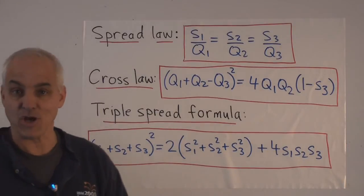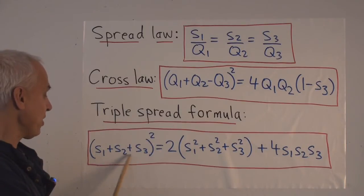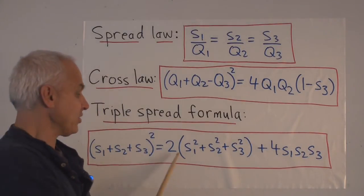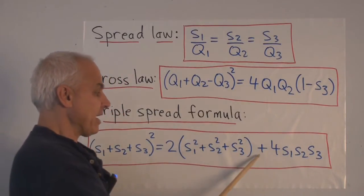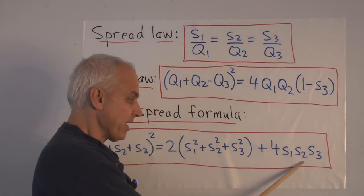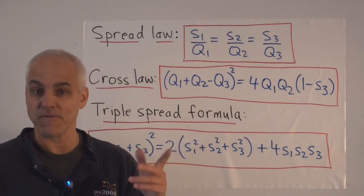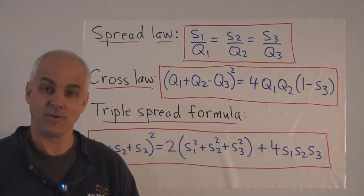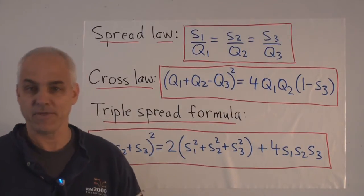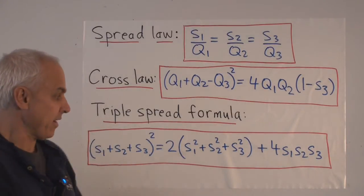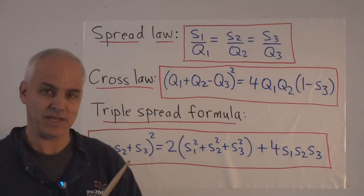Finally, there's a relationship between the three spreads of a triangle called the triple spread formula: (s1 + s2 + s3)² = 2(s1² + s2² + s3²) + 4·s1·s2·s3. This is the rational analog of the fact that the sum of three angles in a triangle adds up to π. Note that the triple quad formula is essentially this part of the triple spread formula, so there are deep connections between these laws.